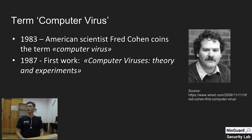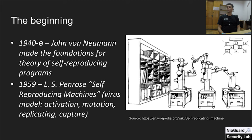RSA — the A stands for Adelman. The model of computer viruses was first proposed by John von Neumann in the 1940s. In 1957, Lionel Penrose also wrote a scientific work called 'Self-Reproducing Machines,' where he described a model of computer viruses similar to biological viruses, including activation, mutation, replication, and capture.